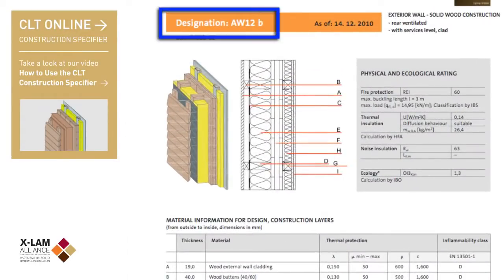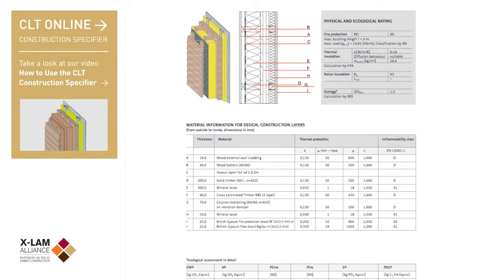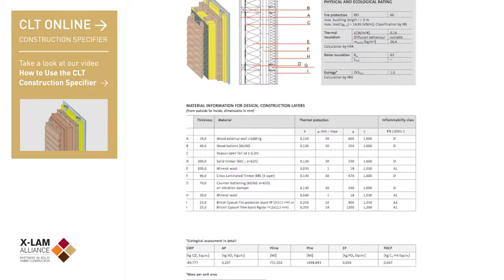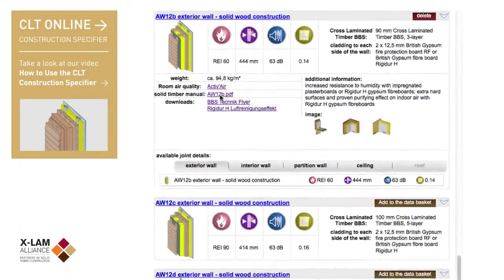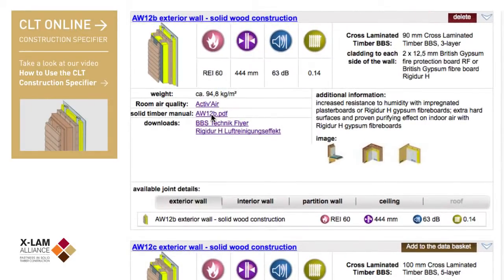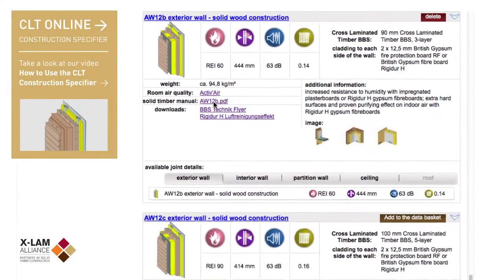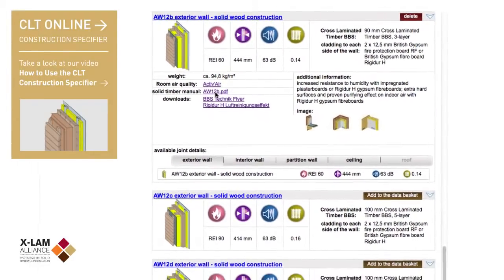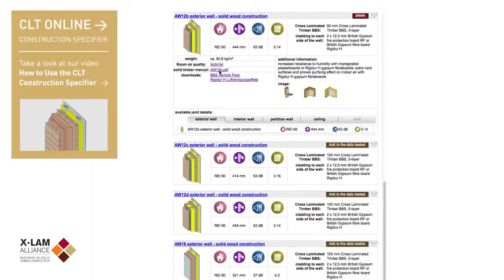This example covers the AW12B exterior wall. Also included are the build-up and performance details expressed in the various formats. You can download the active air summary, the solid timber specification summary as an IFC 3D modeling neutral file format, or directly into Revit for BIM modeling.